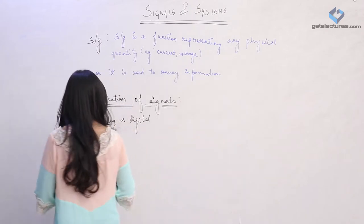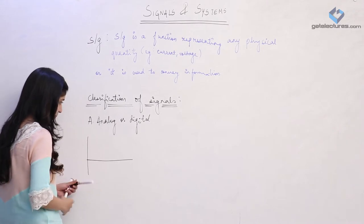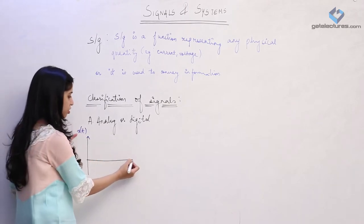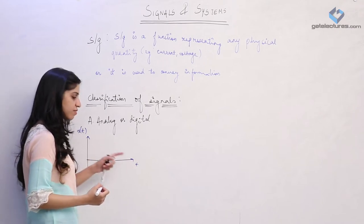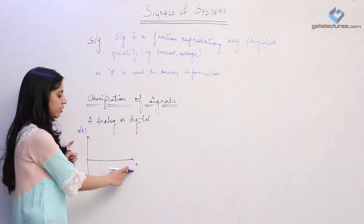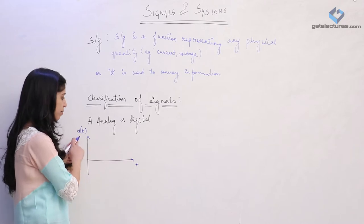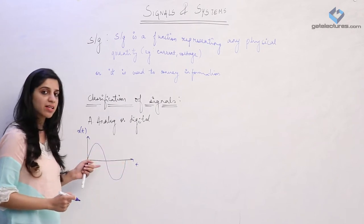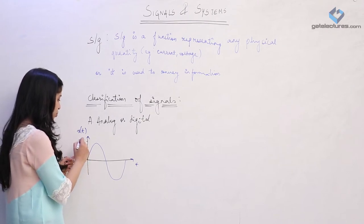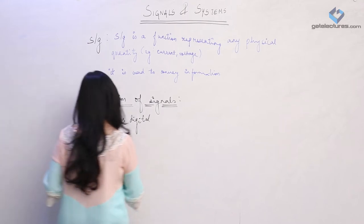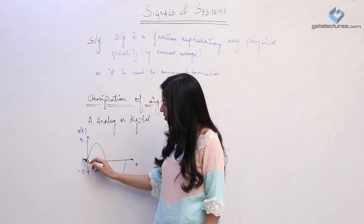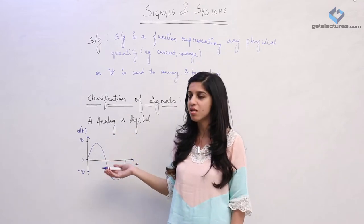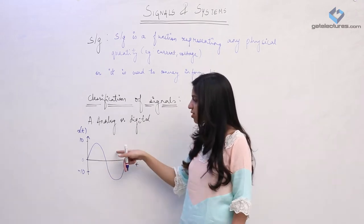I am going to represent both of them here for more clarity. This signal x(t) is a function of time - its value is going to change with time. This is how an analog signal looks. It assumes any value between, say, -10 to 10 - all real values in that range. It does not have any restriction that it can only take integral values. So this is an analog signal.